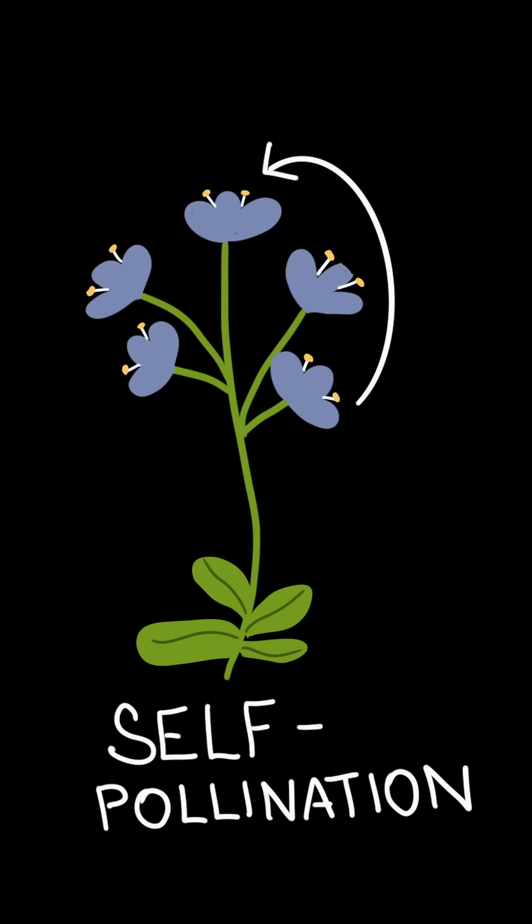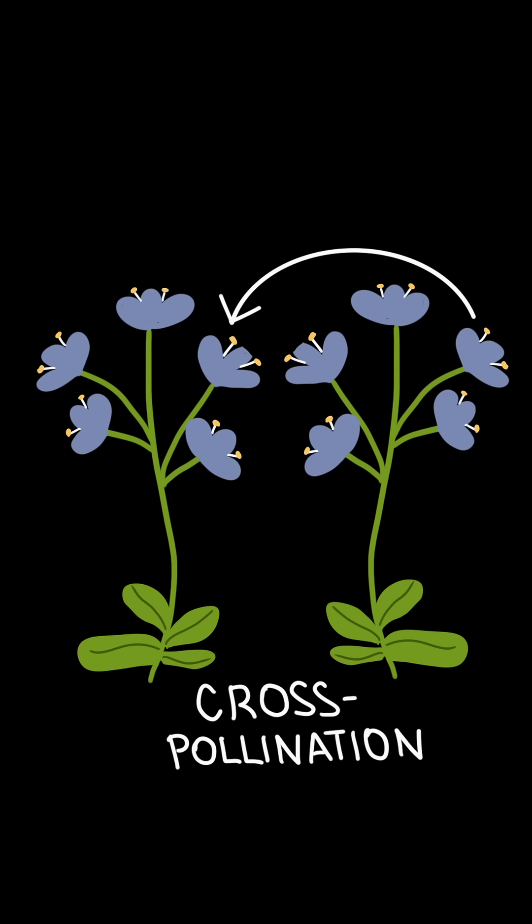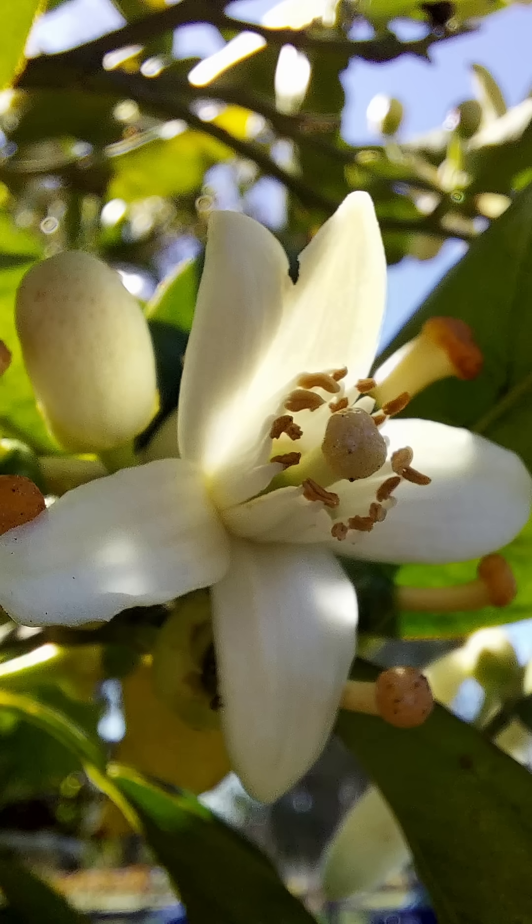This can happen either on the same plant, in which case we talk about self-pollination, or between different plants of the same species, which is referred to as cross-pollination. Let's look at this process in an orange flower.